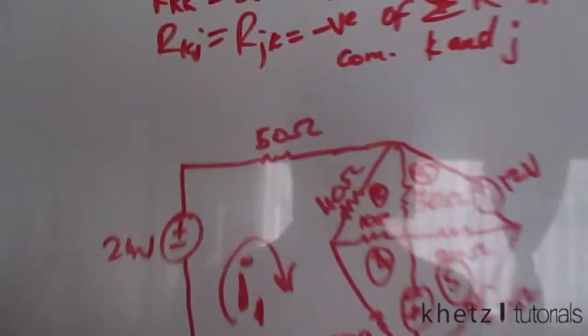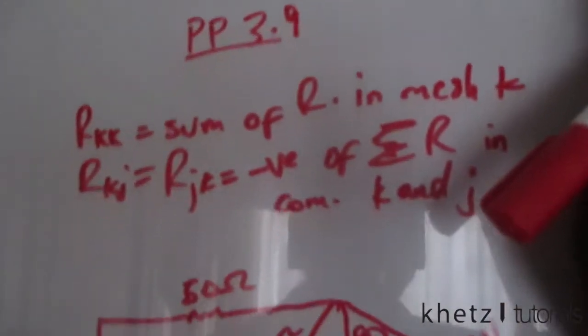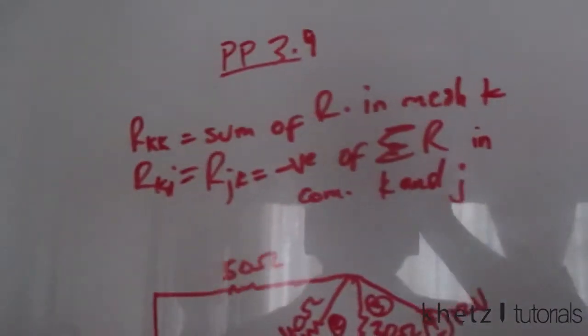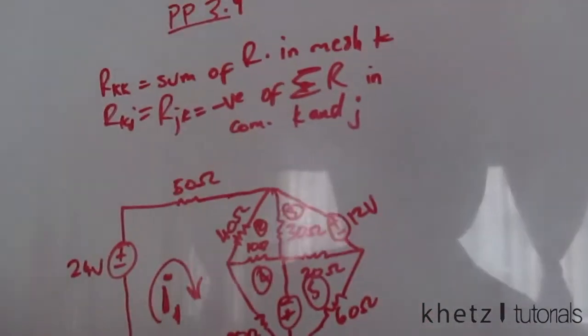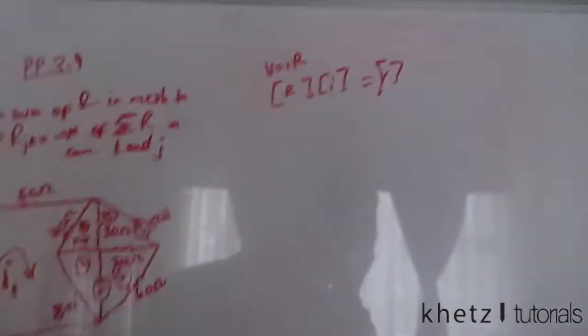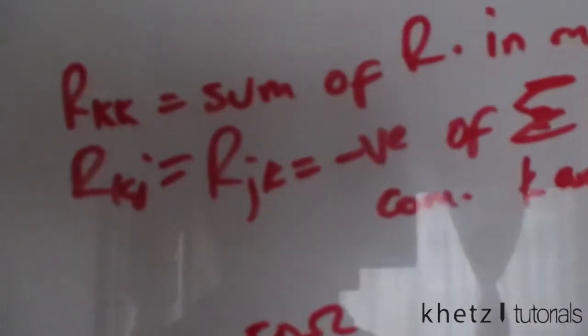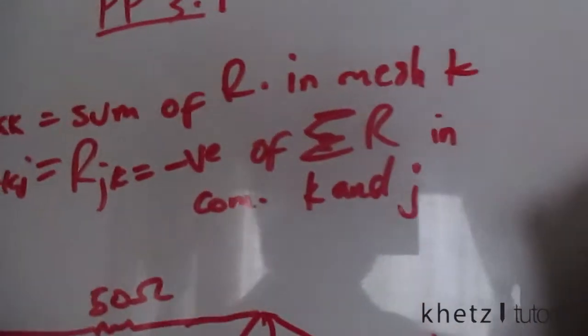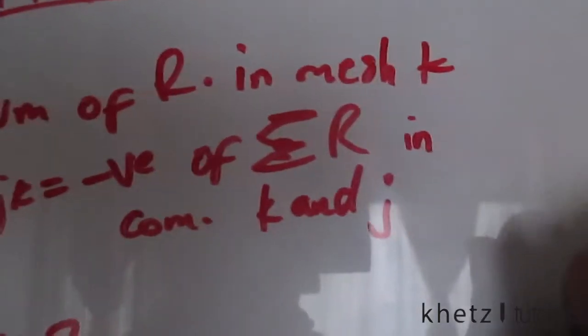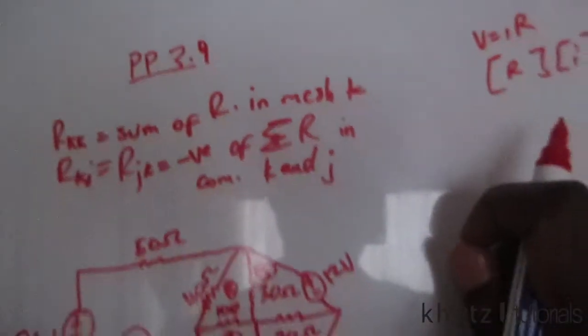We are asked to find the mesh equations using inspection. To recap: we want to form a matrix setup using Cramer's rule. Using Ohm's law the format is R·I = V. In this matrix, Rkk corresponds to the sum of resistors in mesh k, and Rkj (or Rjk) is the negative of the sum of resistances in common with meshes k and j.